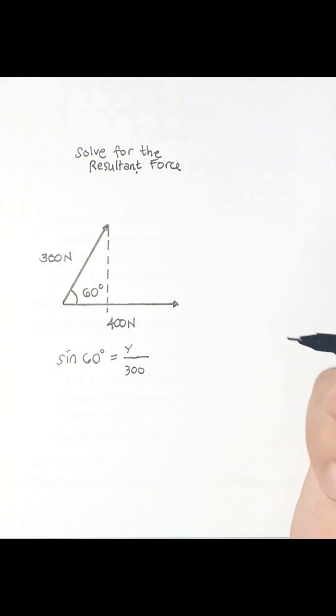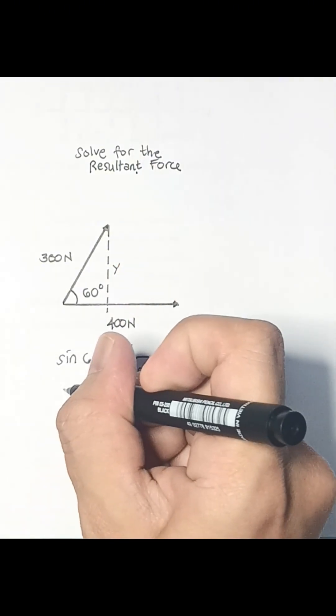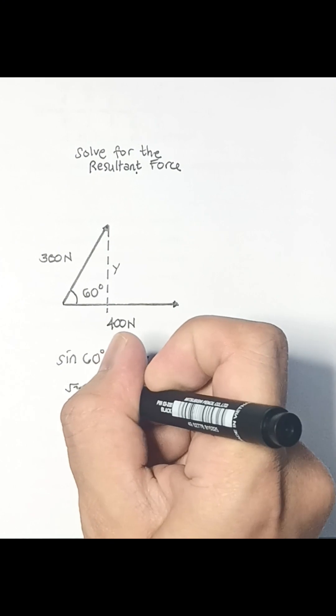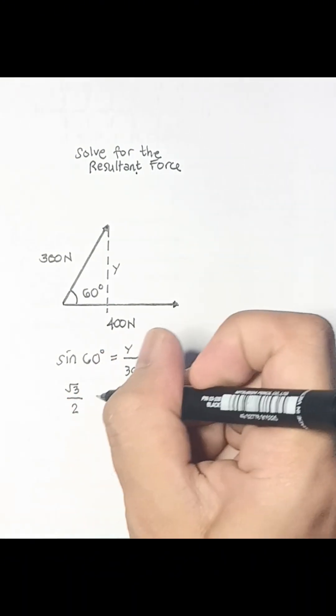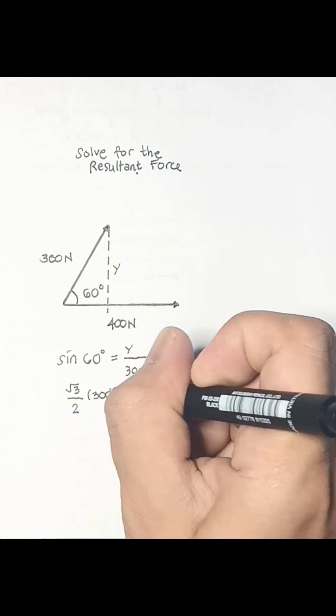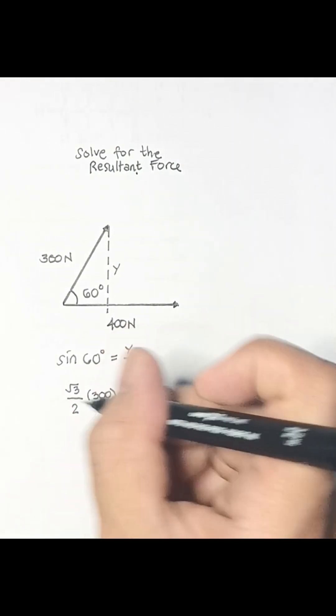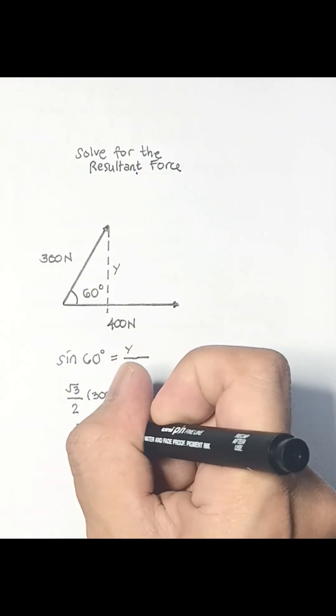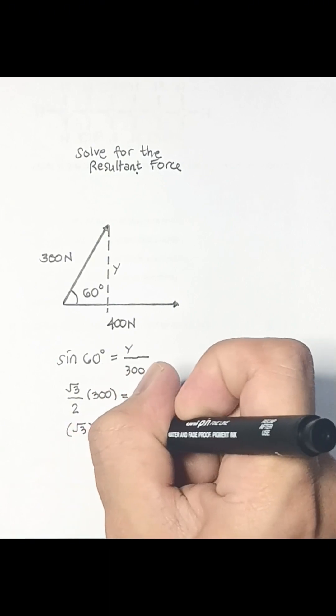y therefore is equal to square root of 3 over 2 times 300, or simply square root of 3 times 150 newtons.